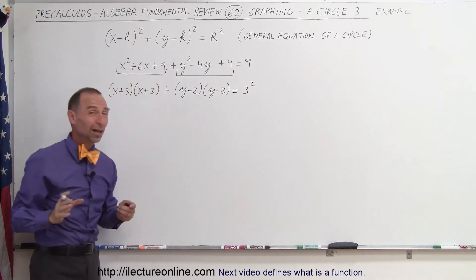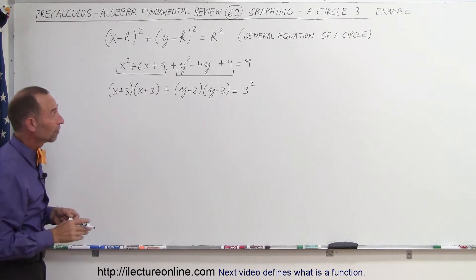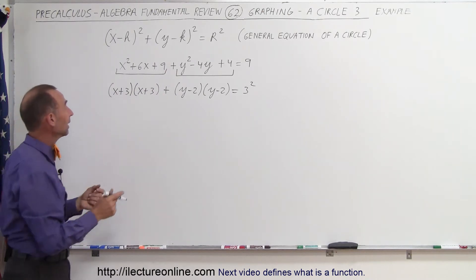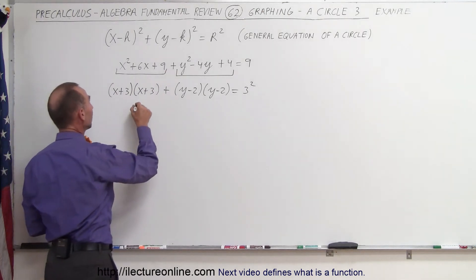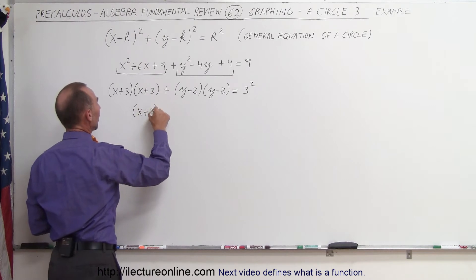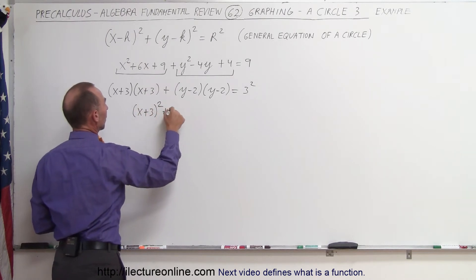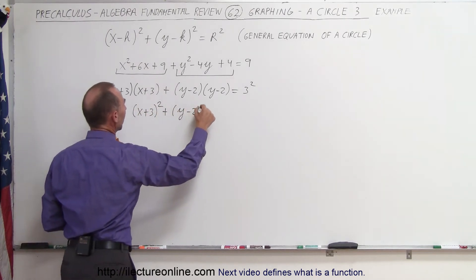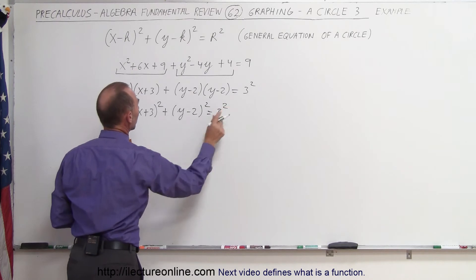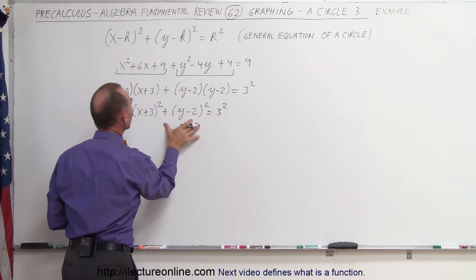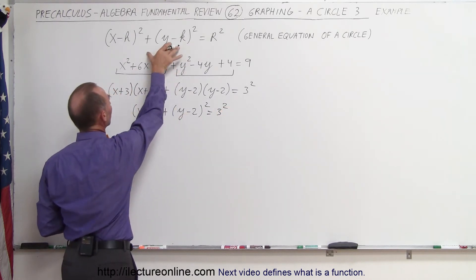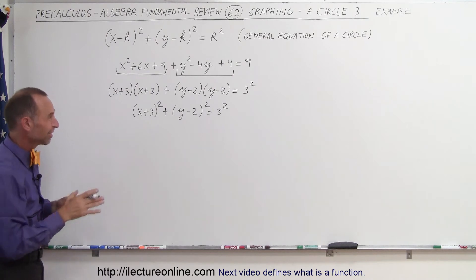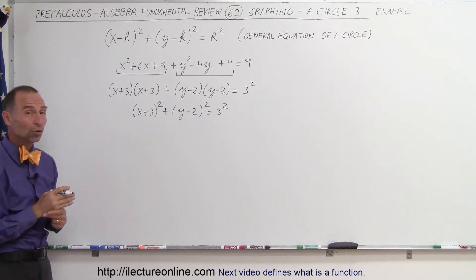Now it's starting to look a lot more like the equation of a circle. If we write it in a different form, combining these and writing it as (x + 3)² + (y − 2)² = 3², we now have it in the general form of the equation of a circle where the center is not at the origin.